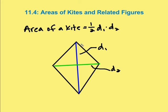So in this case, we have a kite. I've got diagonal 1, which is a blue line, diagonal 2, which is the green segment. And the area of this kite is going to be half of the length of the blue line times the green line.